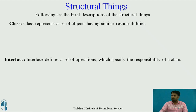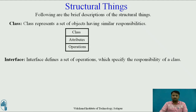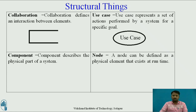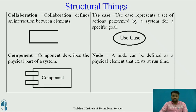Structural things define the static part of the model. They represent the physical and conceptual elements. Class represents a set of objects having similar responsibilities. Interface defines a set of operations which specify the responsibility of a class. Collaboration defines an interaction between elements. Use Case represents a set of actions performed by a system for a specific goal, represented by an ellipse. Component describes the physical part of a system. A Node can be defined as a physical element that exists at runtime.